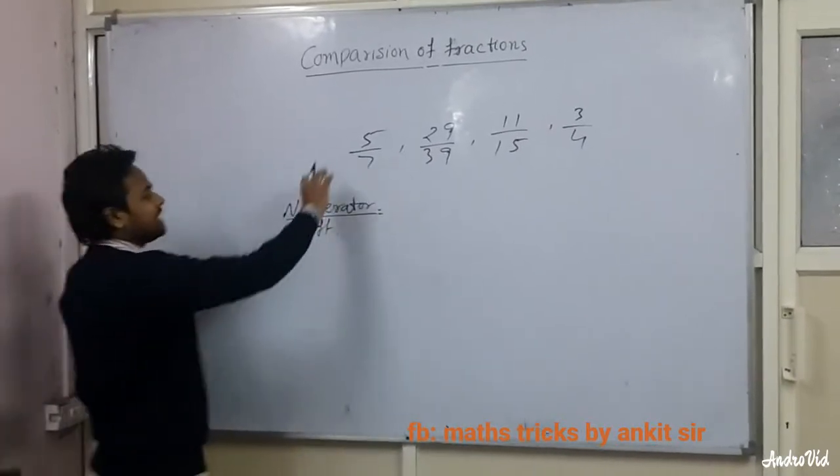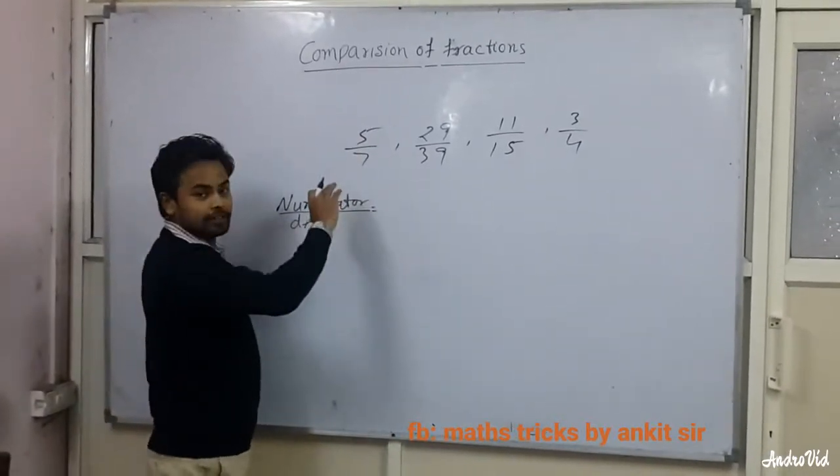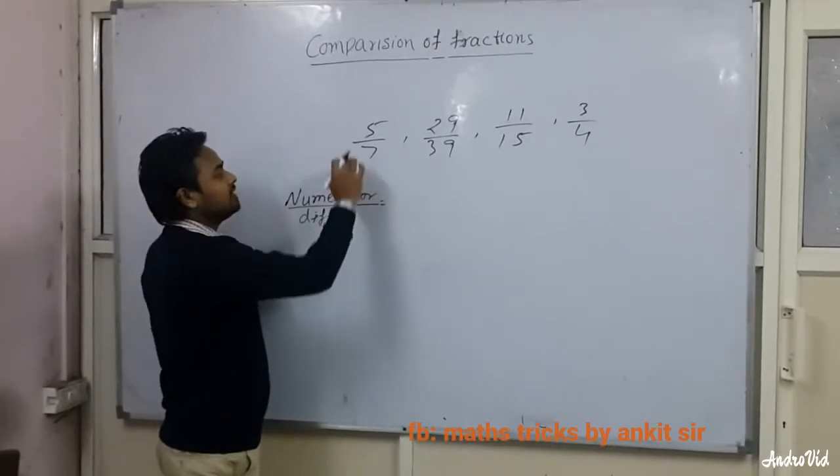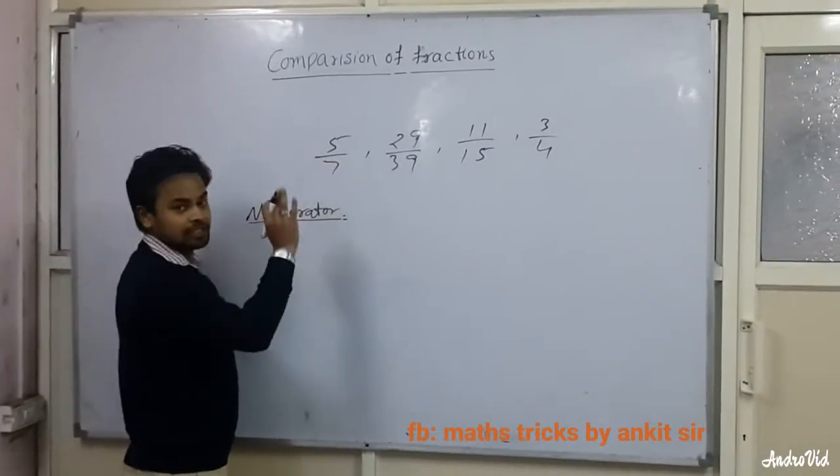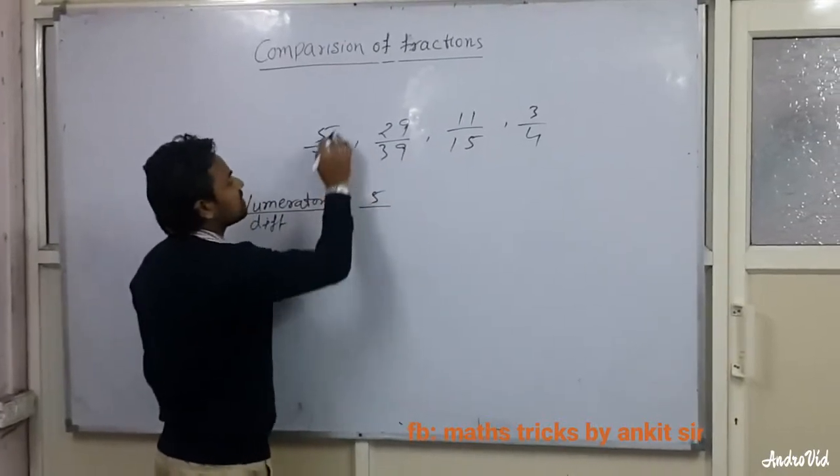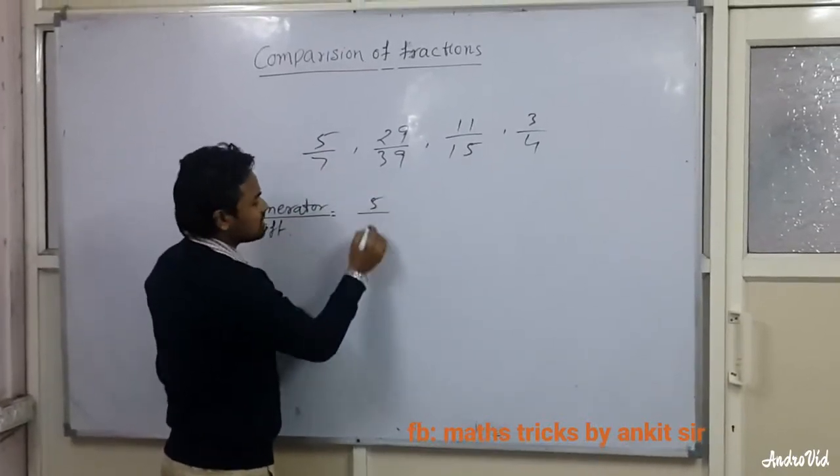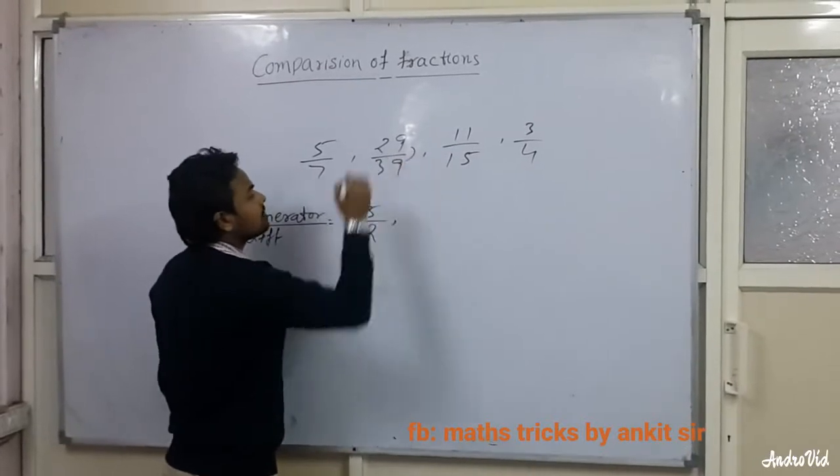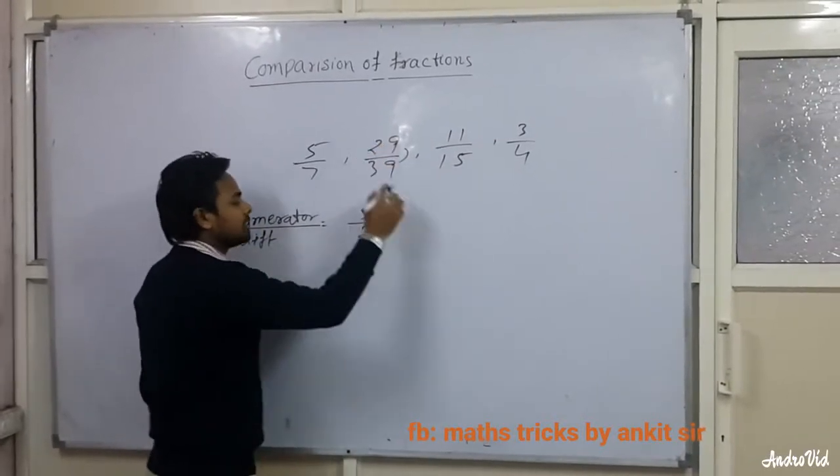What to do is just take the difference between numerator and denominator and divide the respective numerator by the difference. For example, you take 5 and 7, the difference is 2, and 5 is divided by 2. Here, 29 and 39, the difference is 10, and we need to divide 29 by 10. And 11 divided by difference 4, and 3 upon 1.